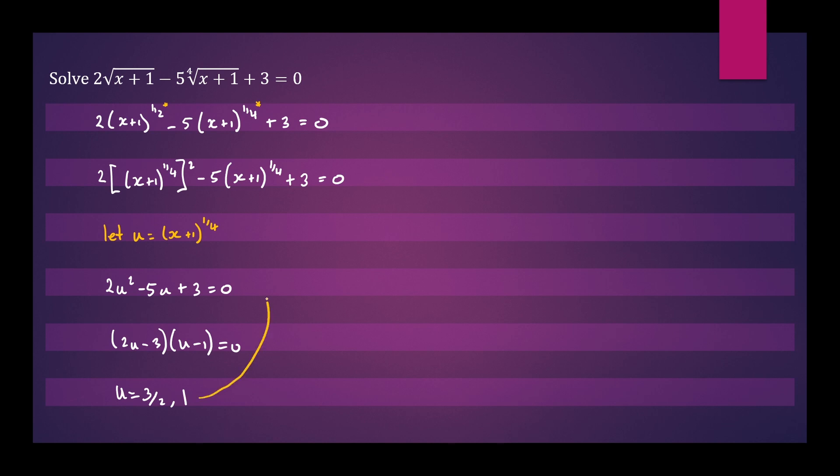So let's go back to our original substitution and calculate x. Now we can write 3 over 2 equals x plus 1 to the quarter power, and we can write 1 equals x plus 1 to the quarter power.